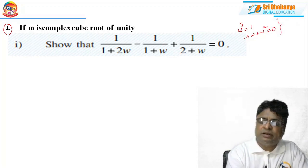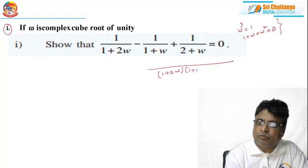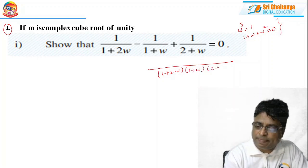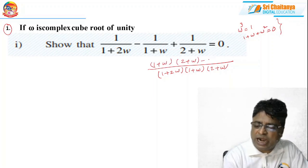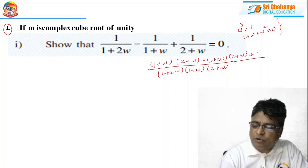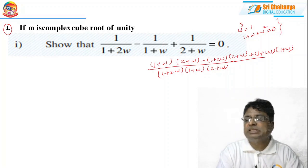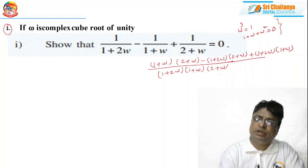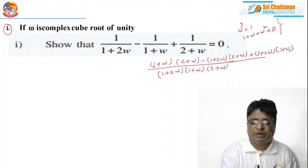How to use these properties? Take the LCM. The LCM is (1 + 2ω)(1 + ω)(2 + ω), and this becomes (1 + ω)(2 + ω) minus (1 + 2ω)(2 + ω) plus (1 + 2ω)(1 + ω). Then simplify the numerator, substituting: whenever ω³ appears write 1; in place of 1 + ω write −ω²; in place of ω + ω² write −1; and in place of 1 + ω² write −ω.